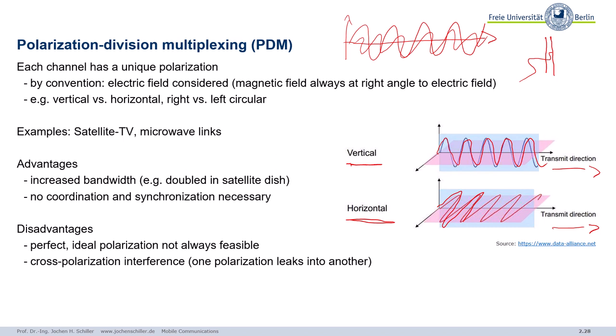The big advantage of PDM is that you can easily double the available bandwidth by transmitting one signal vertically polarized and another horizontally polarized at the same time and frequency. Between perfectly polarized waves there is basically no interference, and you don't need to coordinate or synchronize anything — it's determined simply by how you build the antenna. If you tilt the antenna a bit you also tilt the polarization, so doubling bandwidth is straightforward.